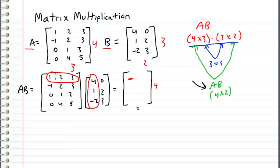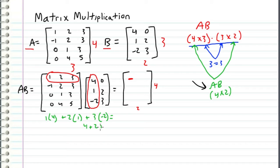To take the dot product of these two vectors, we compute one times four — the first components — plus two times one — the second components — plus three times negative two. This comes out to four plus two plus negative six, which equals zero. So I enter a zero in the first row, first column of the product matrix. This position directly corresponds to the dot product of the first row of A and the first column of B.